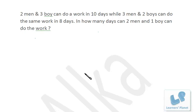Our friends, once again time and work. Here, two men and three boys can do work in 10 days. That means the work is of two men times 10 days, that is 20 man-days, plus 3 into 10, 30 boy-days.